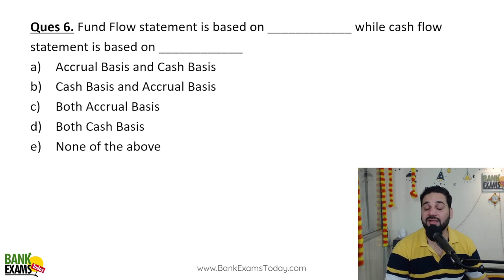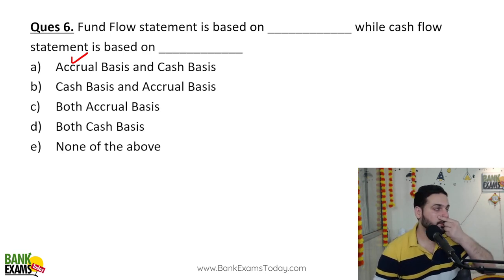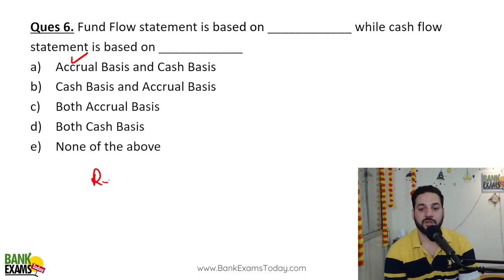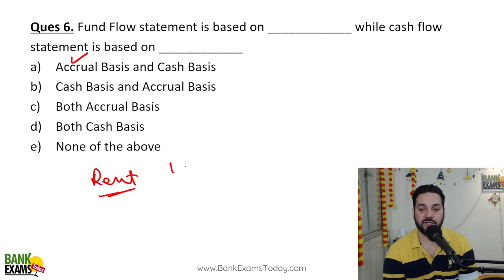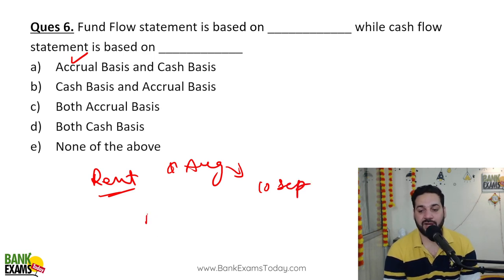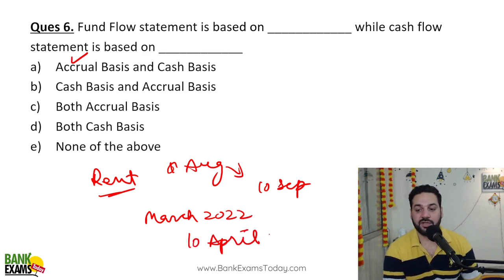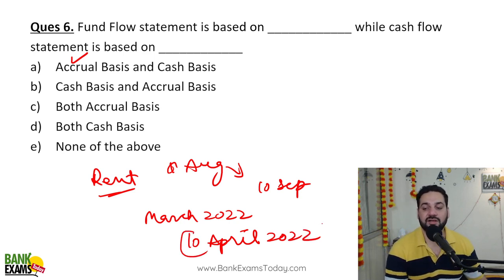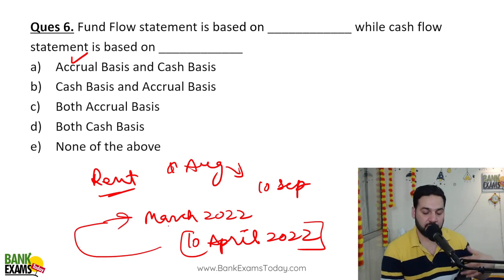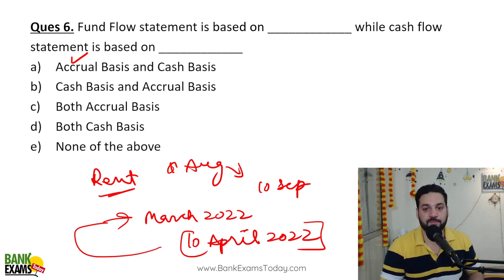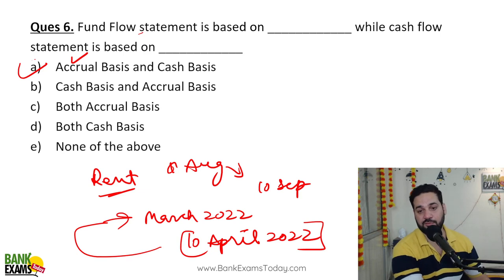Fund flow statement is basically on an accrual basis — that means when the money is due. For example, rent for August is due on 10th of September, and rent for March 2022 is paid on 10th of April 2022. As per the accrual basis, this rent should take effect in March 2022 itself, in the previous financial year. But as per the cash basis, it is recorded when cash is actually paid. So fund flow is based on accrual while cash flow statement is based on cash.